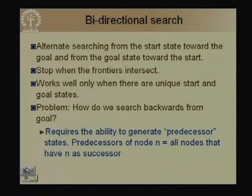In bidirectional search we carry on the search process forward from the start state and backward from the goal, alternating these two phases. For example, we expand some nodes forward, then some backward, then forward again, and so on. Every time we expand a node we check whether it has been expanded in the other search tree. We stop when the frontiers of the forward and backward trees intersect.